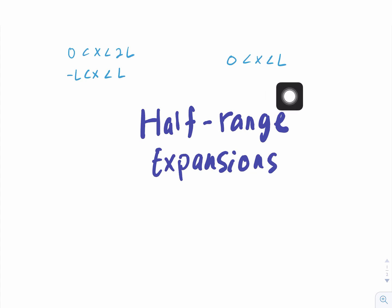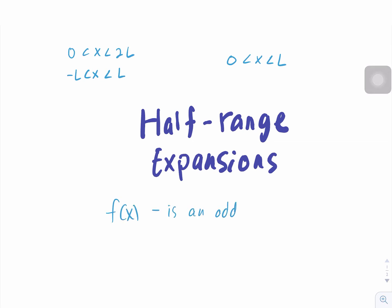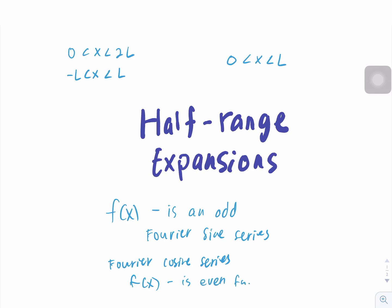From our function, we can construct a Fourier series depending on what we want. For example, if we want to make it a Fourier sine series, then f(x) must be an odd function. If we want a Fourier sine series, our a₀ and aₙ are equal to zero, while bₙ equals 2 over L times the integral from 0 to L of f(x) sine(nπx/L) dx.